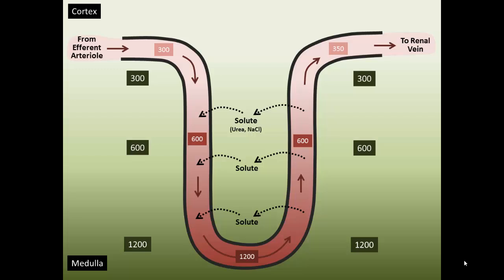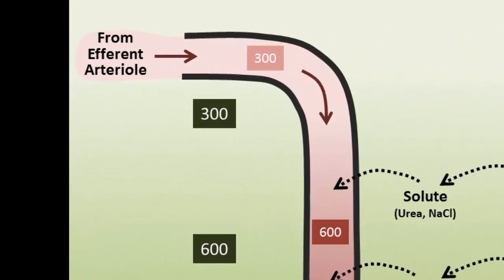So the vasa recta is immediately following the efferent arteriole, which if you remember, just follows the glomerulus of the juxtamedullary nephrons. The blood plasma, as it is entering into this vasa recta, while we're still in the superficial regions of the kidney here up in the cortical areas, is going to be roughly isoosmotic to the total body fluid. So somewhere around 300 milliosmoles per liter.